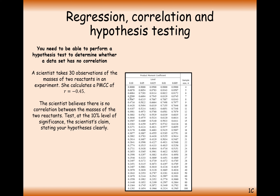The fewer data points you have, the more evidence you need that they form a straight line. In this question, a scientist takes 30 observations of the masses of two reactants in an experiment. She calculates the PMCC value to be R equals minus 0.45. The scientist believes there is no correlation between the masses. Test at the 10% significance level the scientist's claim, stating your hypotheses clearly.